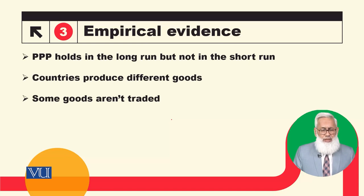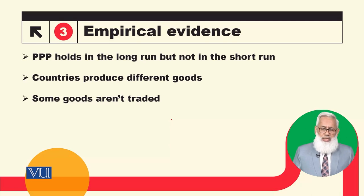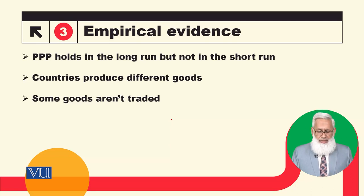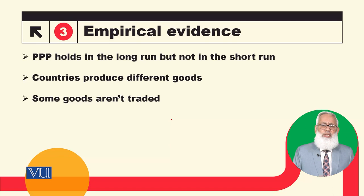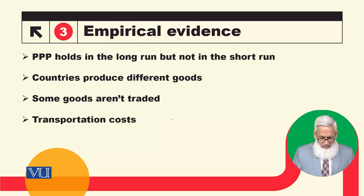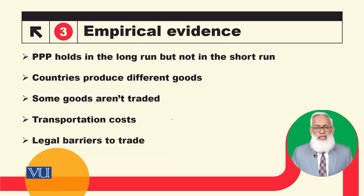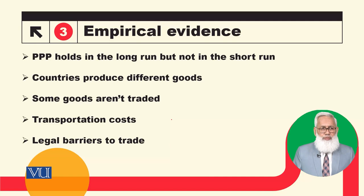Some goods are not traded. ہم نے simplicity کے لئے example assume کیا کہ ایک ہی شئے ہے — وہ پاکستان کا برگر بھی اور امریکن برگر بھی ایک ہی طرح کے ہیں — جبکہ ایسا نہیں ہوتا۔ Different countries are producing different goods, اور پاکستان میں جو کچھ produce ہوتا ہے وہ ساری international market میں trade نہیں ہوتا۔ Transportation cost بھی ہوتی ہے اور there are some legal barriers to trade — ان وجوہات کی بنا پر یہ purchasing power parity short run میں hold نہیں کرتی۔